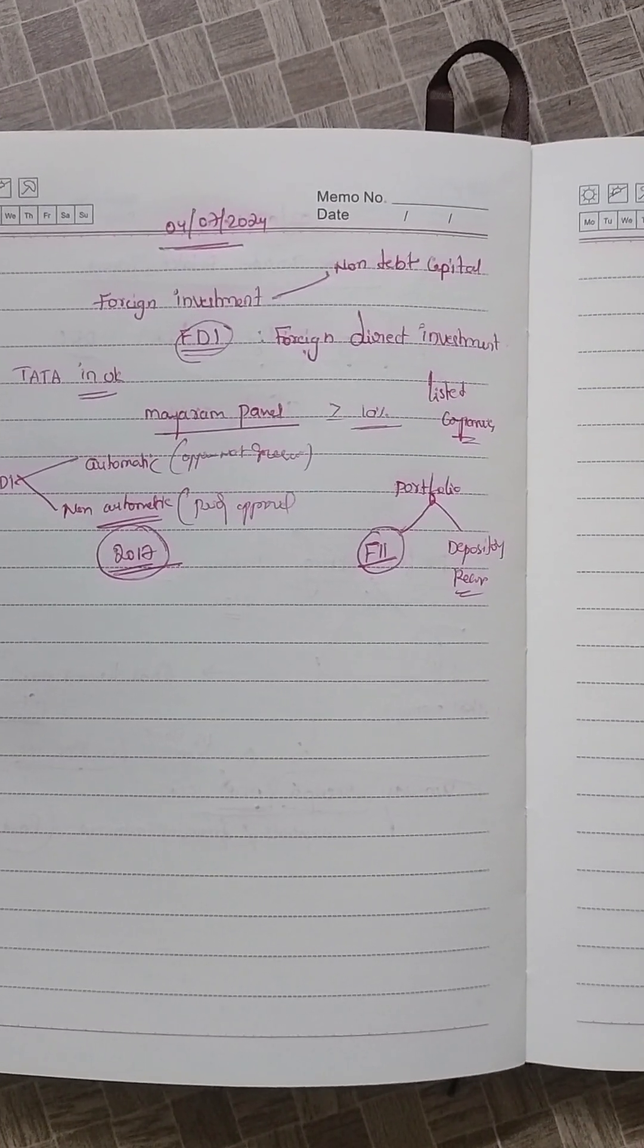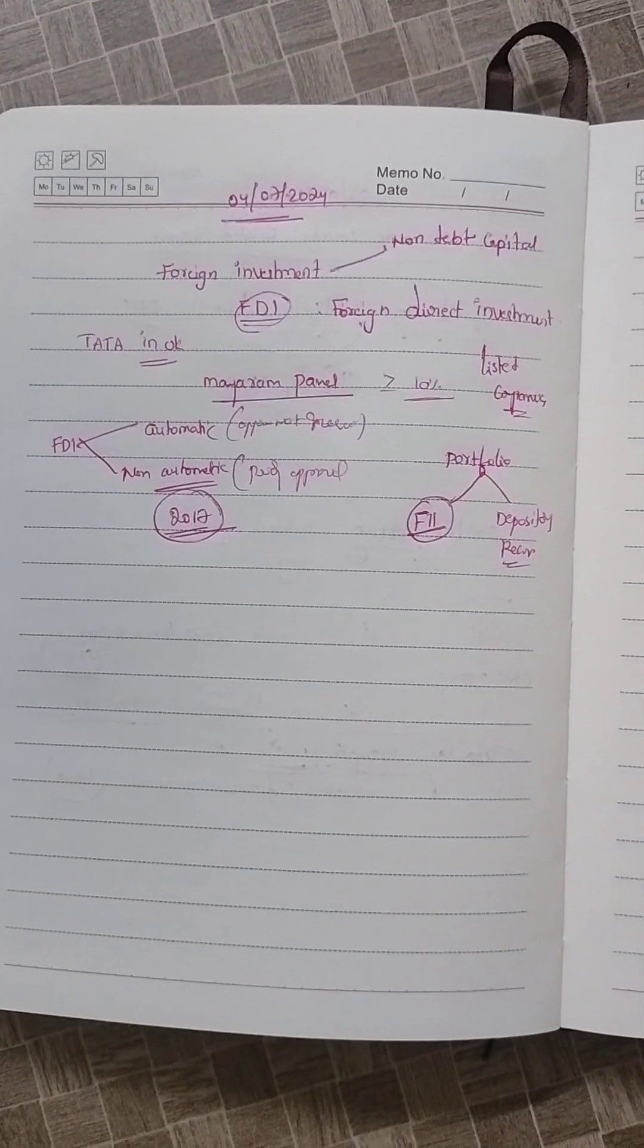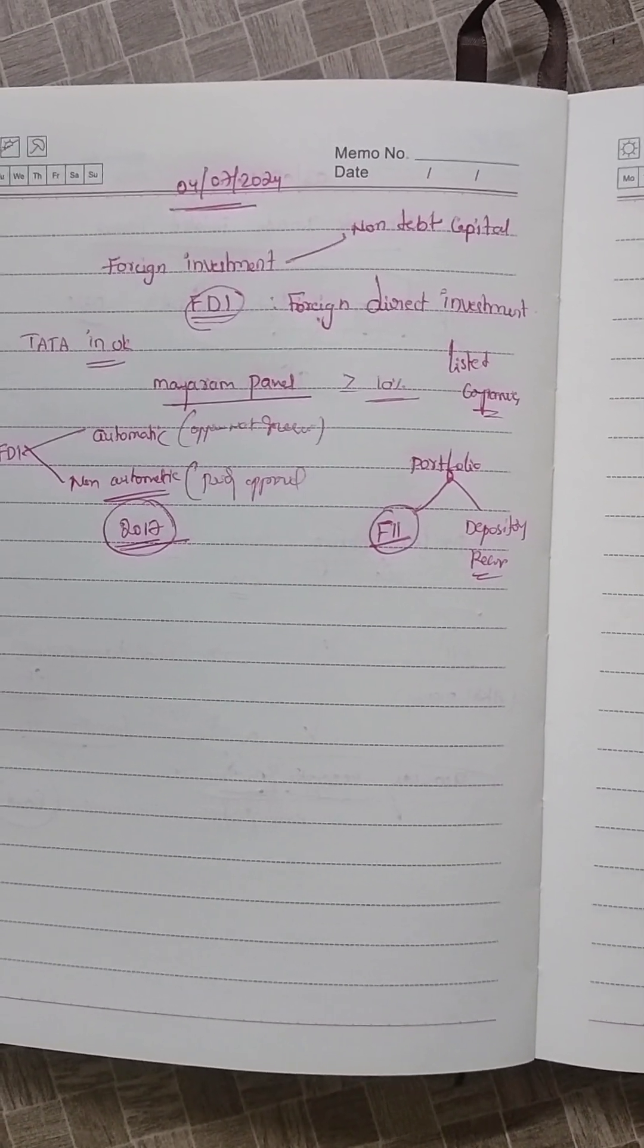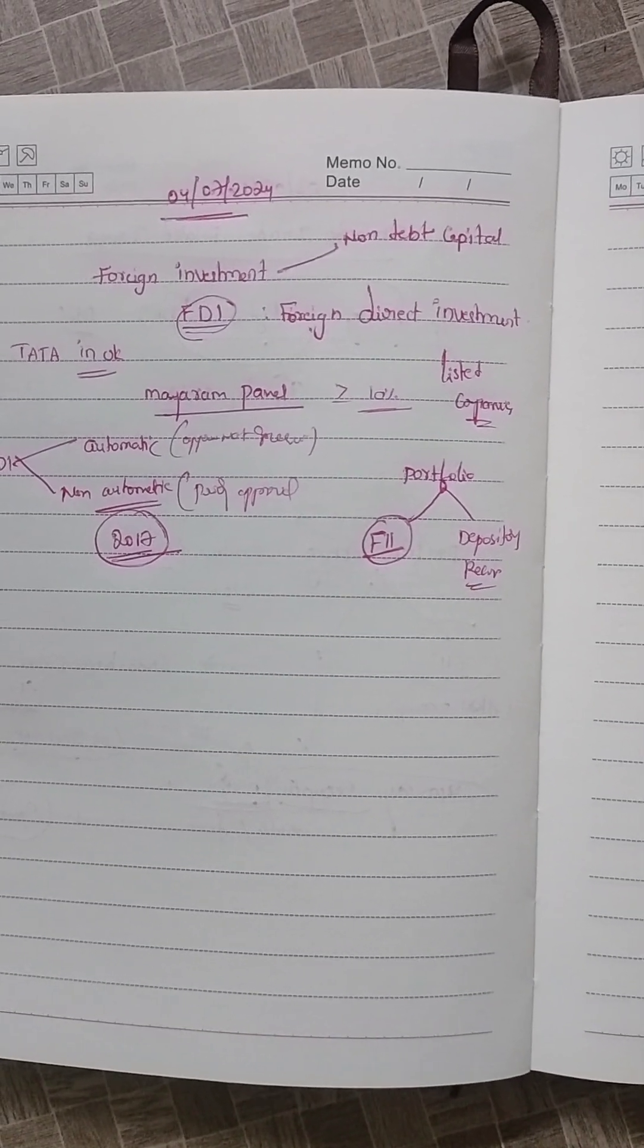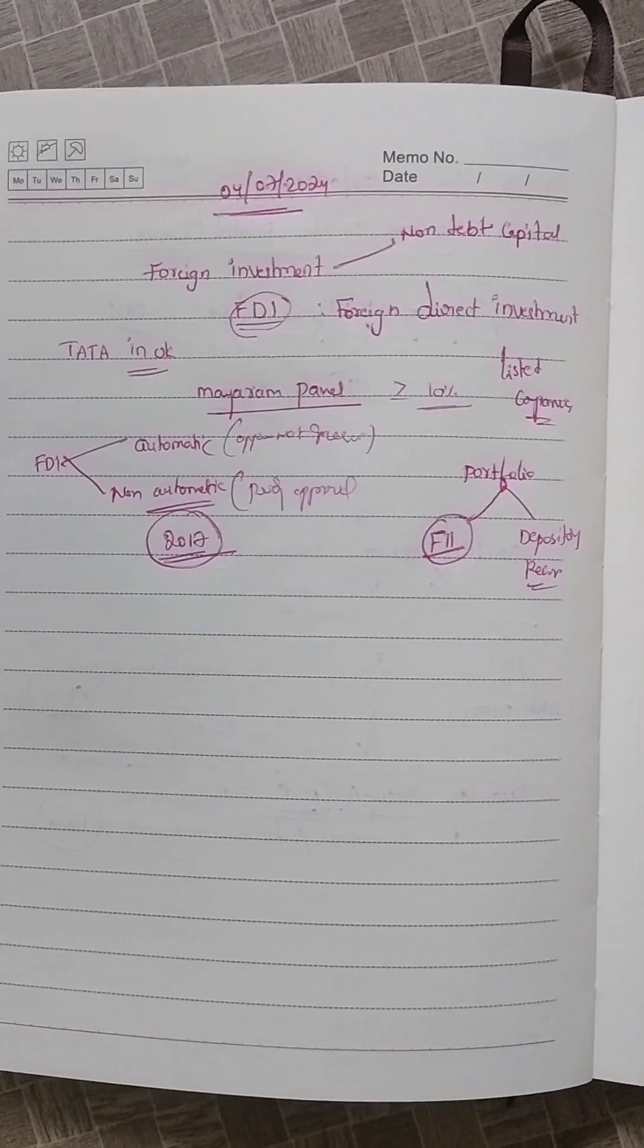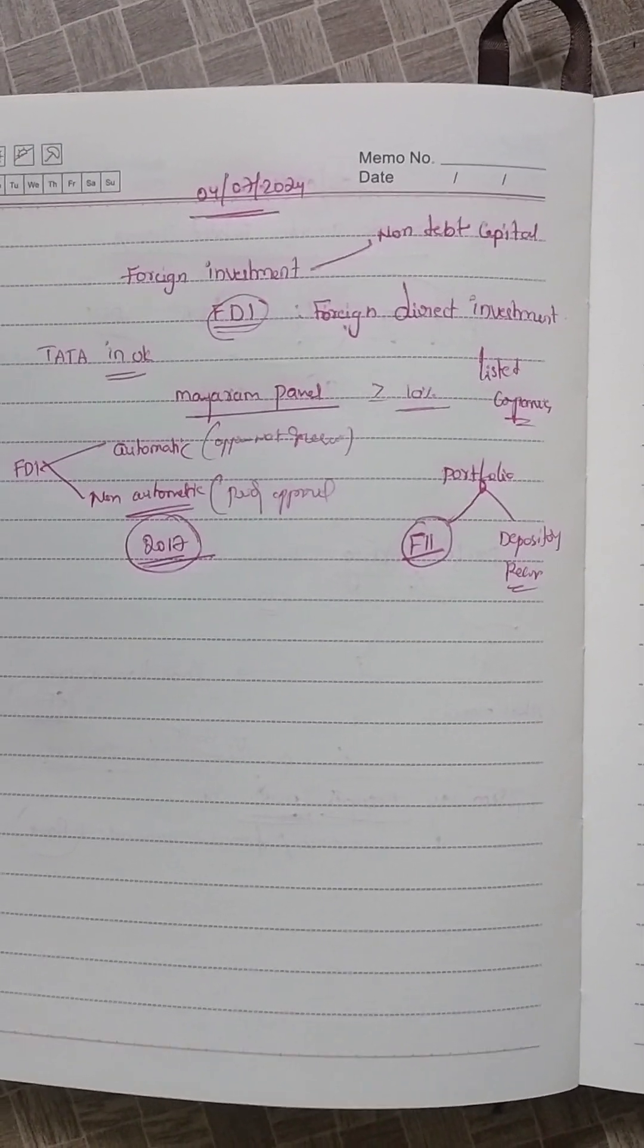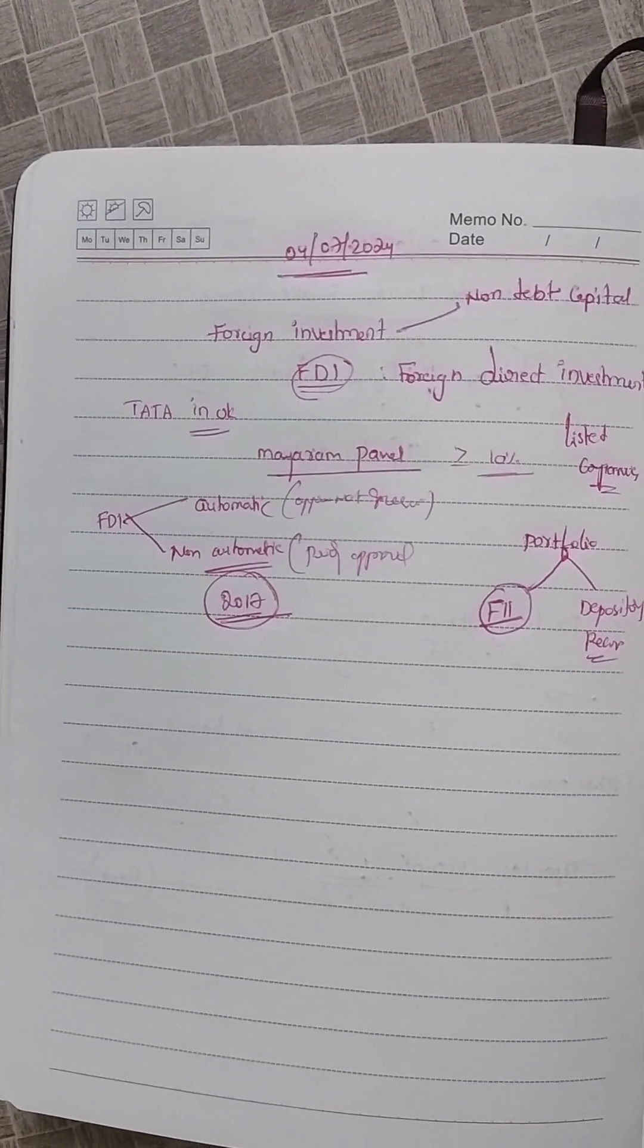FDI is restricted in atomic energy and railway operations, lottery companies, chit fund companies, housing and real estate except development of townships, construction of residential and commercial premises, roads, bridges, and real estate investment trust under SEBI regulation. Manufacturing of tobacco products is also restricted.